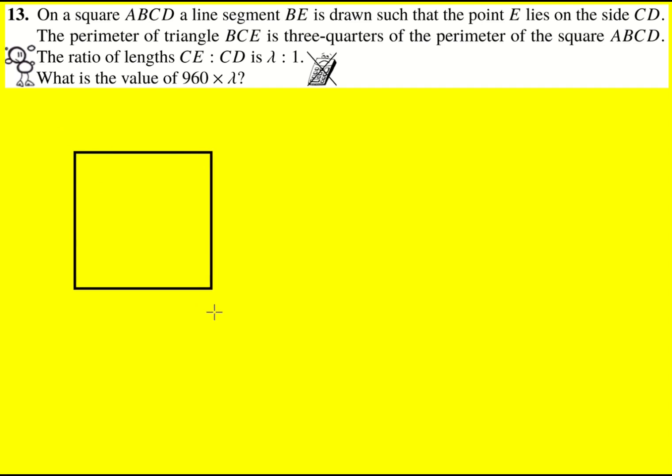I'm just going to sketch this down to start with. So A, B, C, D, and then we're told that there's a line segment BE such that E lies on the side CD. I don't know exactly where it's going to be but I'm just going to stick it here. It's not going to matter, this is only a sketch. So now this point is going to be E.